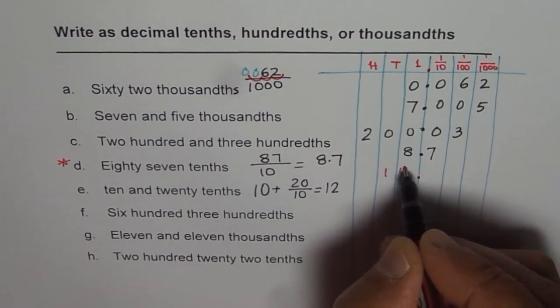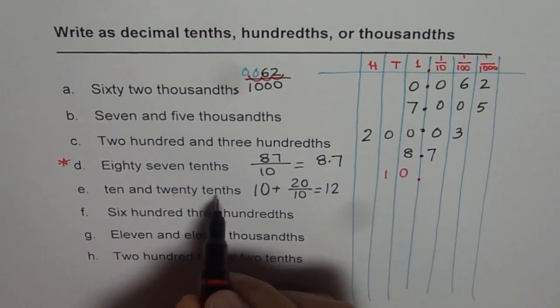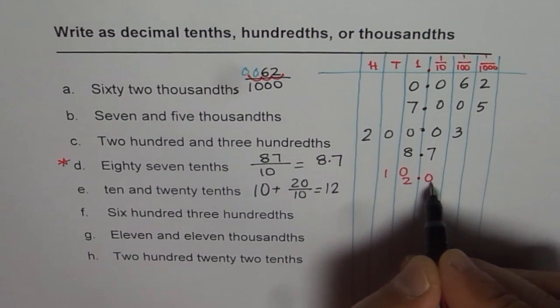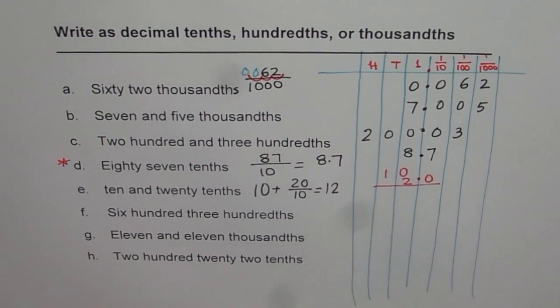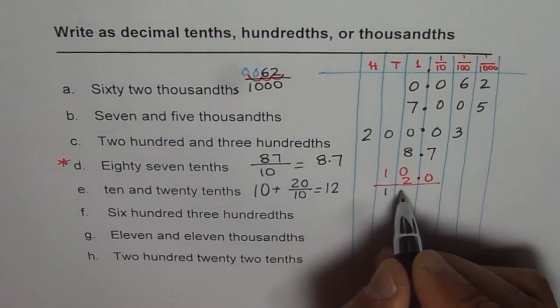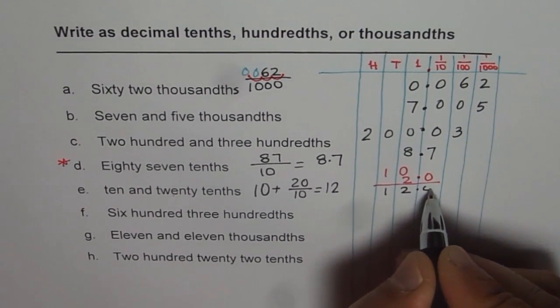So let me write ten before decimal. So that is decimal. So we have ten here. And then we have twenty tenths. That means two zero. Do you see twenty tenths? So when you add this up, what do you get? You get ten and twenty tenths, which is twelve point zero.